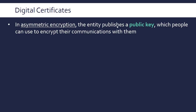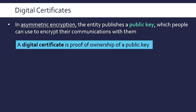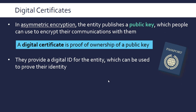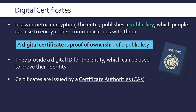In asymmetric encryption, the entity wanting people to encrypt messages to them publishes a public key, available to anyone. A certificate gives us proof of ownership of a public key — a public key is just a very long number that doesn't tell us who it belongs to automatically. You need to associate it with the entity via a certificate, so a certificate is like an ID for the entity, proving their identity. Certificates are issued by certificate authorities (CAs), businesses whose whole job is to associate entities with a public key, verifying that the entity is who they say they are and that they own the public key.